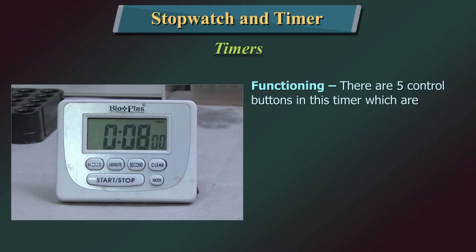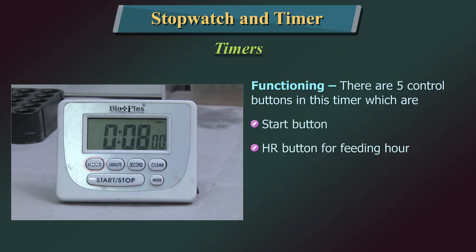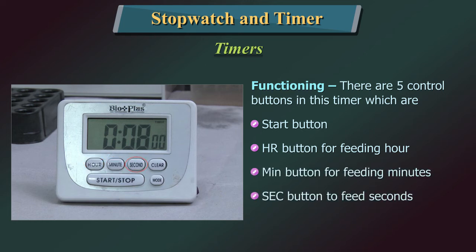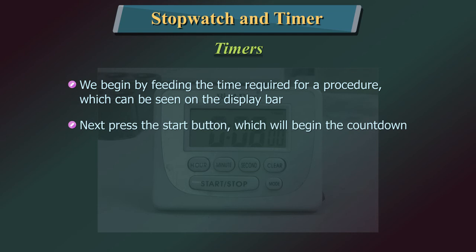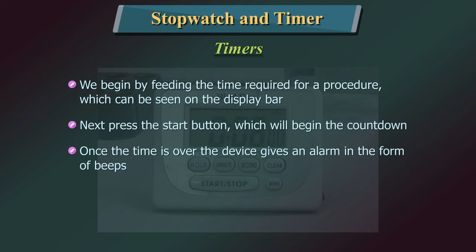As you can see in this particular timer, there are five control buttons: the Start button, HR button for feeding hours, Minutes button for feeding minutes, Seconds button to feed seconds, and Stop button. We begin by feeding the time required for the procedure, which can be seen on the display. Next, press the Start button which begins the countdown. Once the time is over, the device gives an alarm in the form of beeps. The Stop button is used to stop the device.